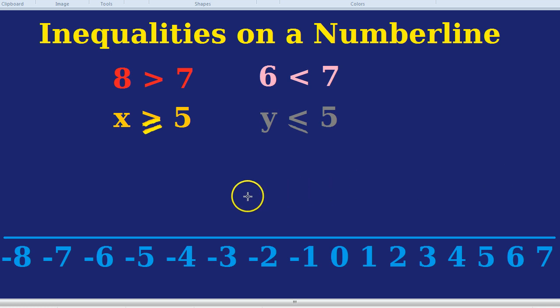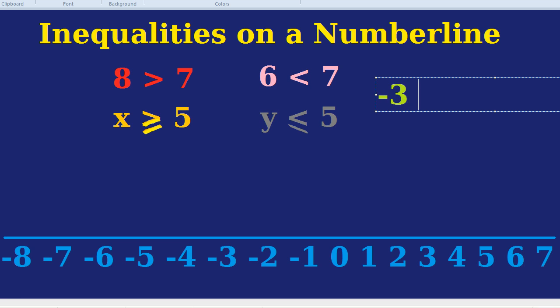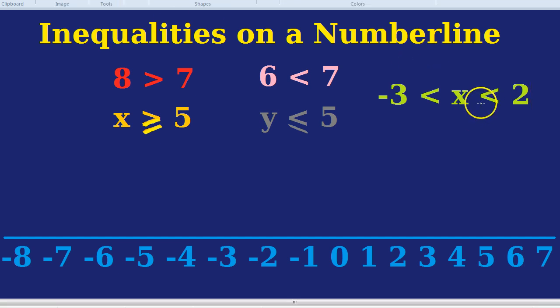Before we go for our first number line trial, I want to introduce you to perhaps one of the hardest type of inequalities. And that's where you have more than one inequality represented in the same expression. How about if I said minus 3 is less than x, which is less than or equal to 2. What different numbers are satisfied by that?